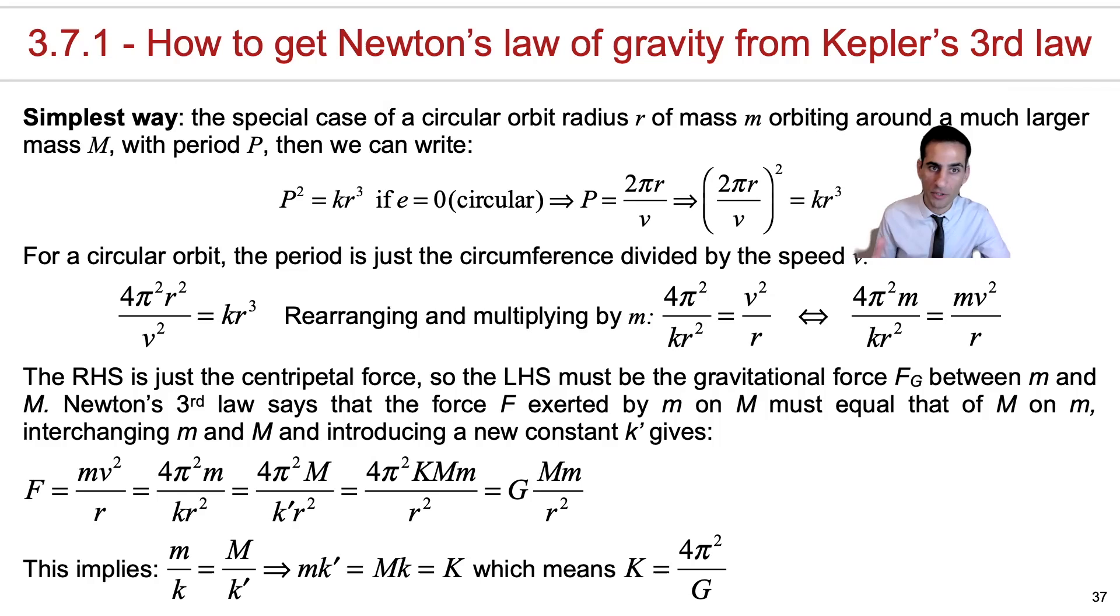For circular motion the great thing is that the period is just the circumference divided by the speed v. So you can also write it in this form over here and if you rearrange the expression and you multiply by the small mass m you can also write it in this form.